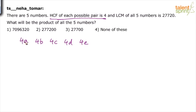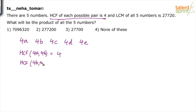So we assume the five numbers are 4A, 4B, 4C, 4D, and 4E. Then HCF of 4A and 4B will be equal to 4, because A and B will have no other common factor. Similarly, HCF of 4B and 4C will also be 4, and so on for all possible pairs. That is what is given — HCF of all possible pairs is 4.